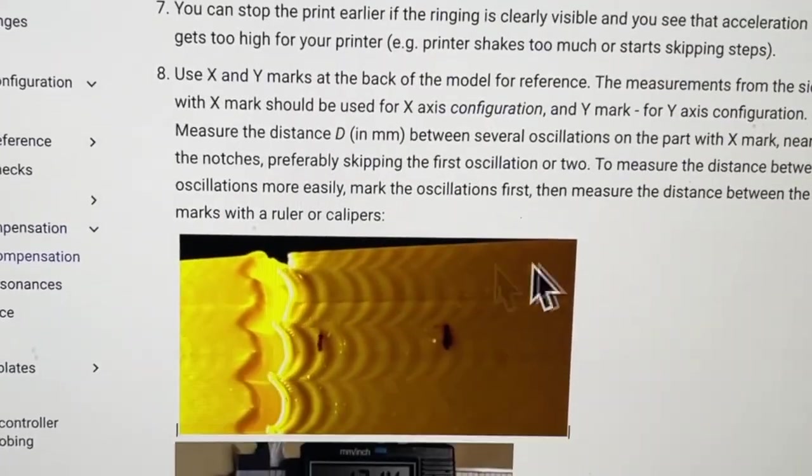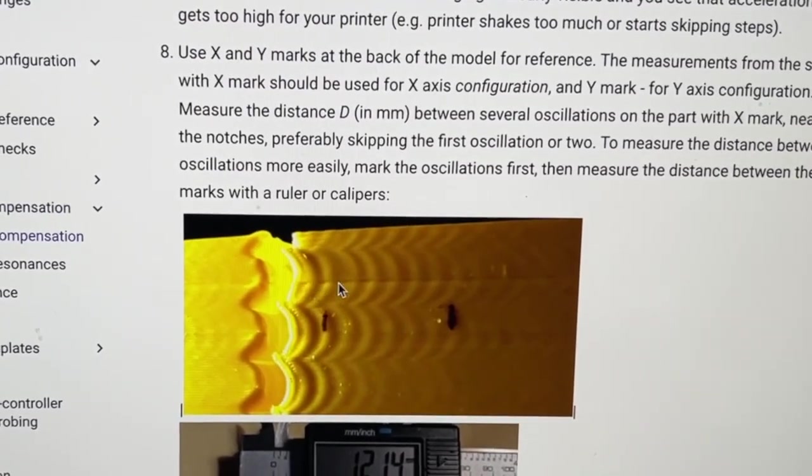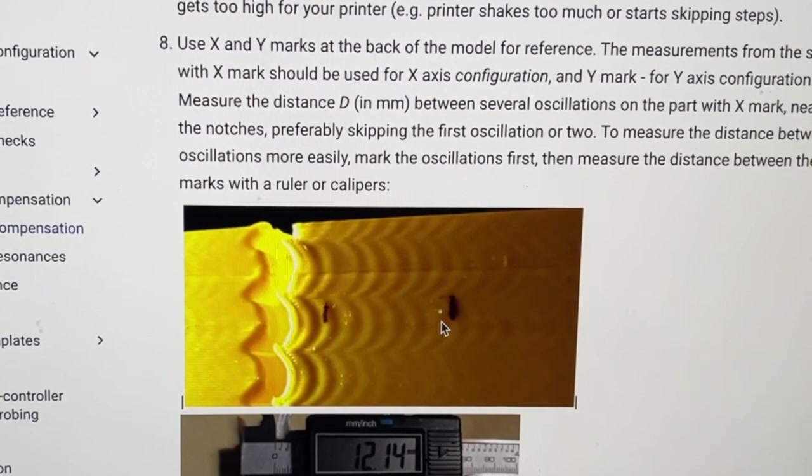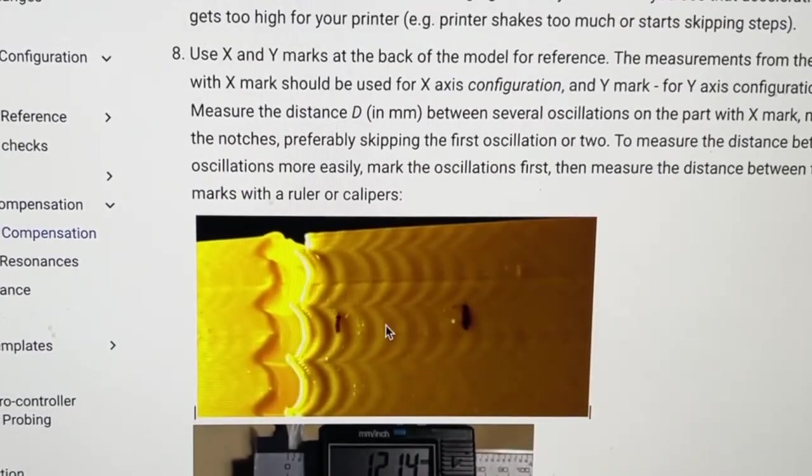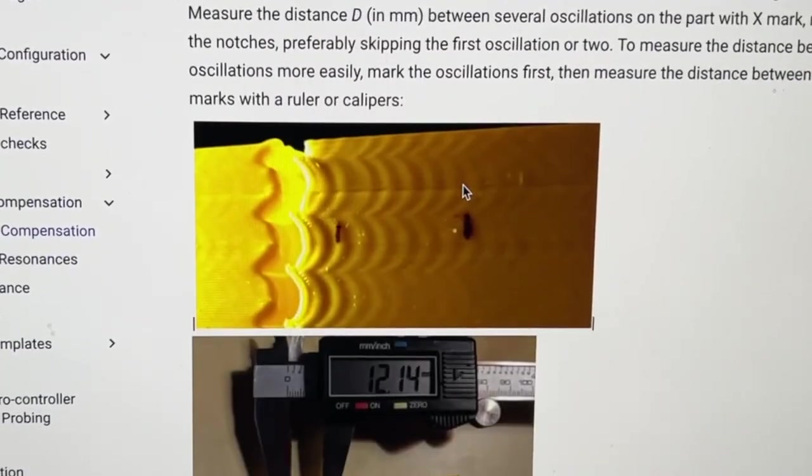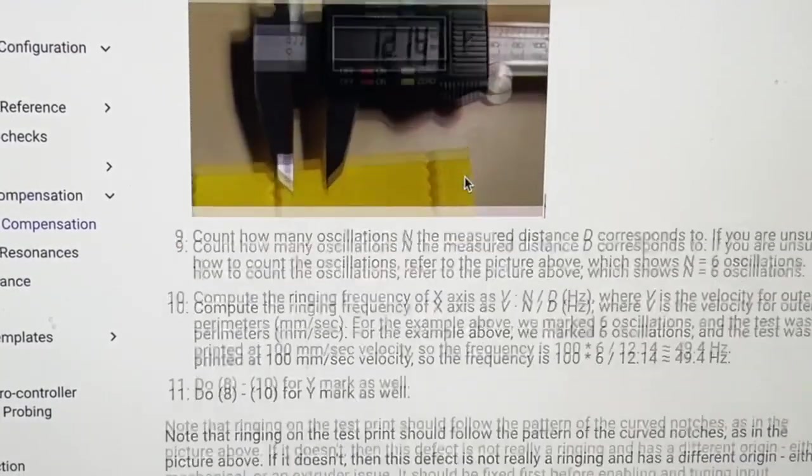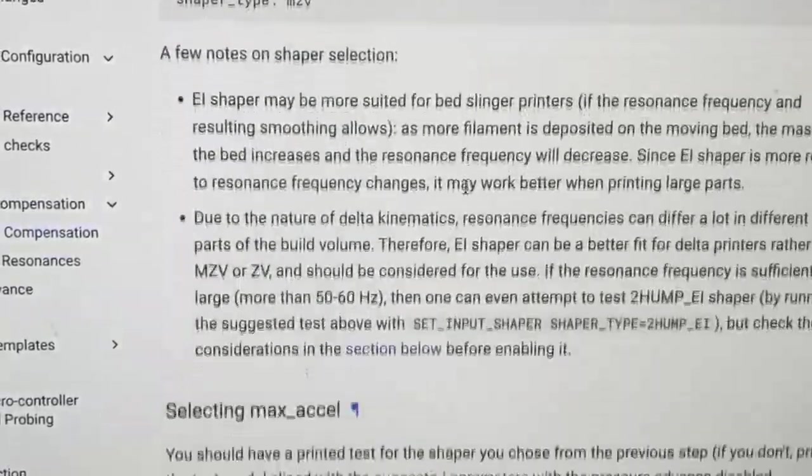I recommend reading through the resonance compensation documentation if you really want to learn more about the theory behind input shaping and ringing frequency and all that fun stuff. It walks you through how to do this manually. So I am again printing this tower because if you see any of this artifacting that's what you're trying to get rid of with input shaper.